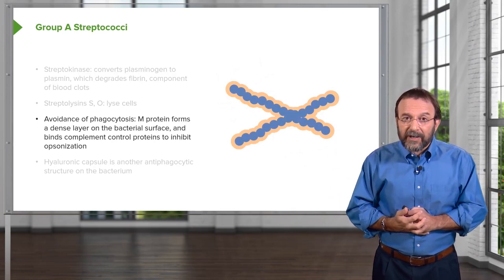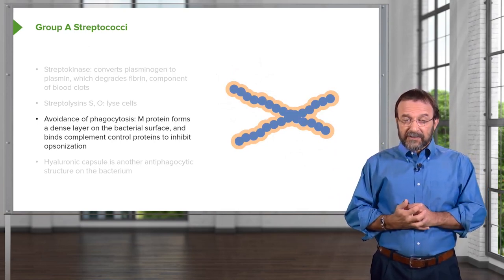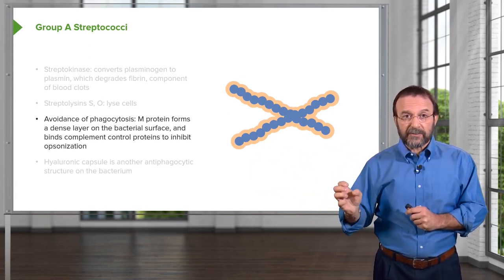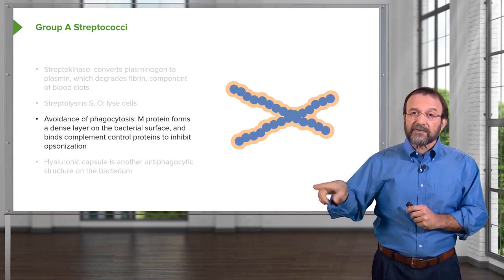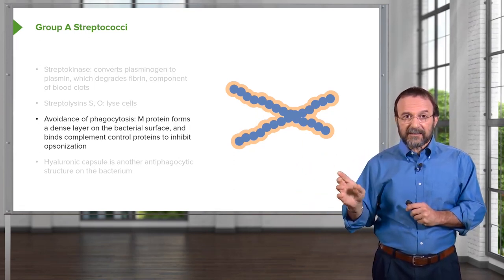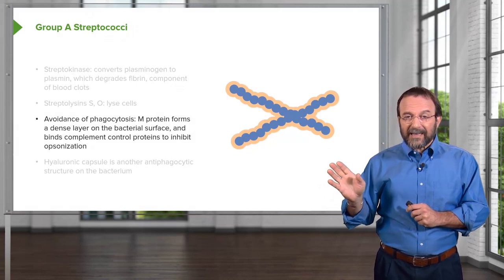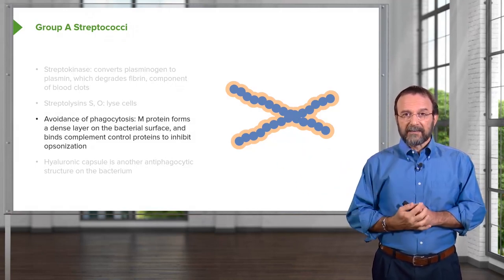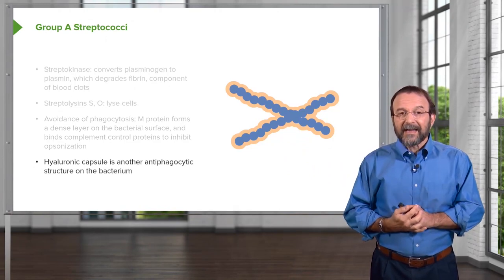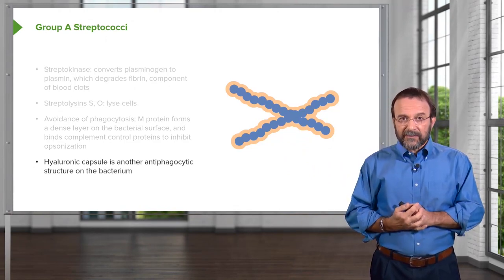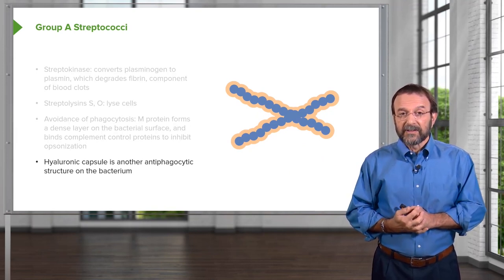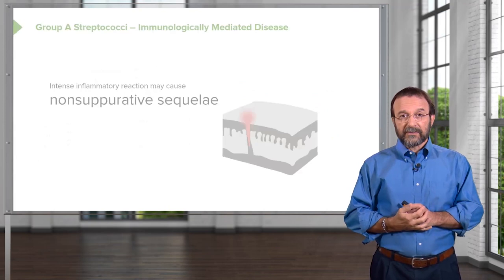Streptococci are also very good at avoiding phagocytosis. They have an M protein on their surface that forms a dense layer, binds complement, and inhibits uptake by macrophages. The bacteria also have a capsule on the outer surface, another anti-phagocytic structure. So they have at least two ways to avoid phagocytosis and destruction.